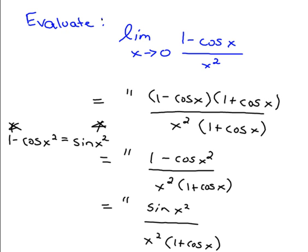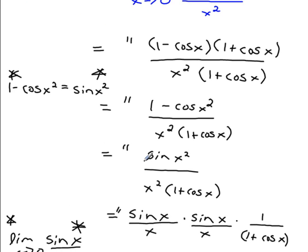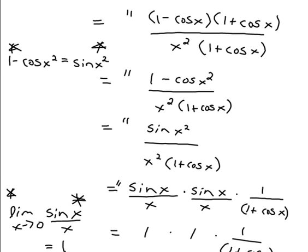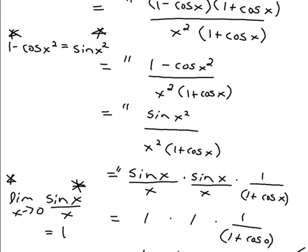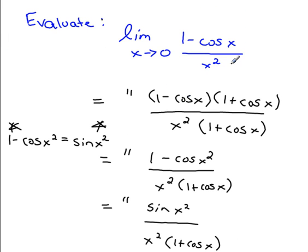A question that started off quite complicated ended up being rather simple. We used algebra as our first step — the same idea as rationalizing the numerator. Then we remembered the funnel effect and used the trig identity that 1 minus cos squared x equals sine squared x. We split up our limit into smaller terms and used the identity that the limit as x approaches zero of sine x over x is one, giving us a final answer of one half.